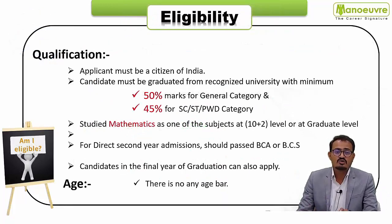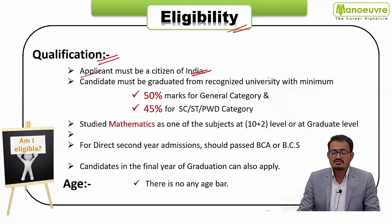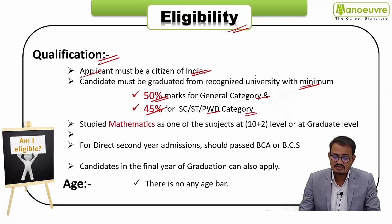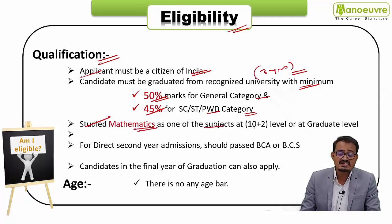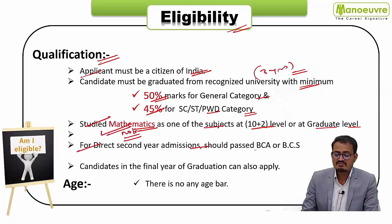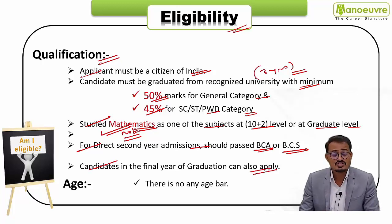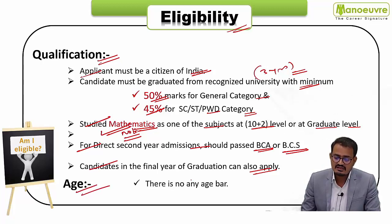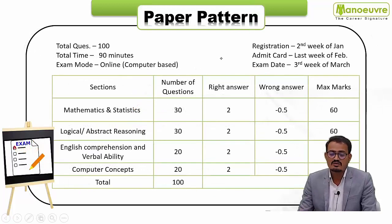Now let's talk about the eligibility criteria. The applicant must be a citizen of India and must have graduated from a recognized university with a minimum of 50% marks for the general category, and 45% for SC/ST and PWD categories. The graduation should be a three-year degree. Very importantly, the candidate must have studied Mathematics as one of the subjects at the 10+2 level or at the graduate level. For direct second-year admission, the candidate should have passed BCA or BCS. Candidates in the final year of graduation can also apply. There is no age bar.